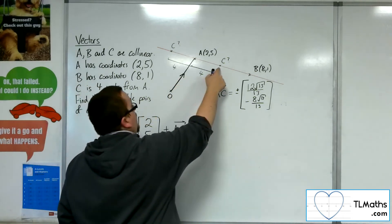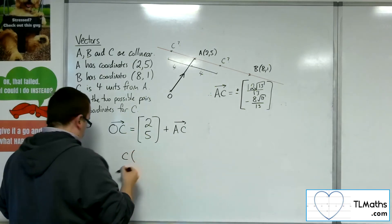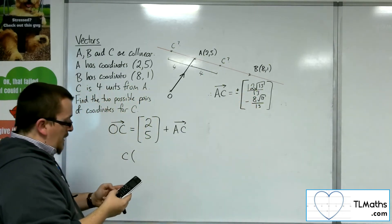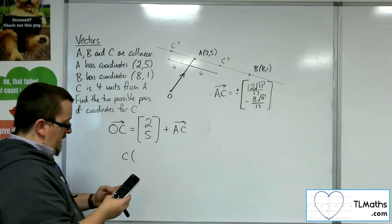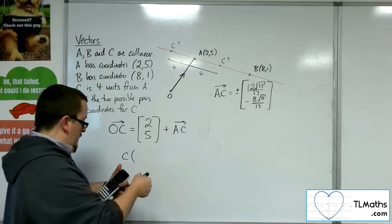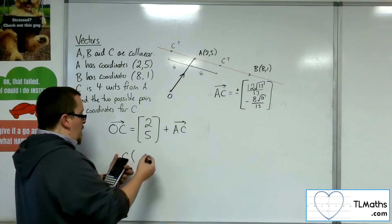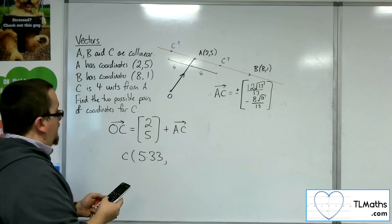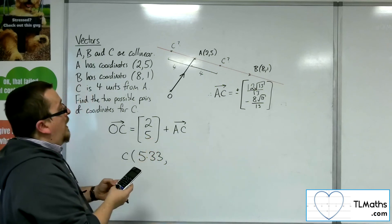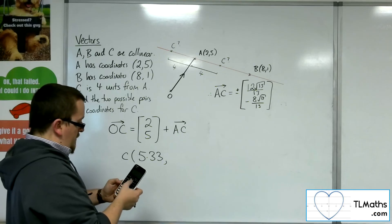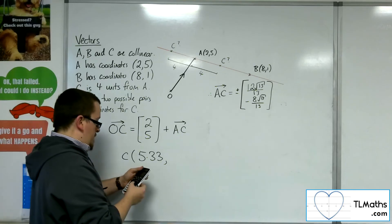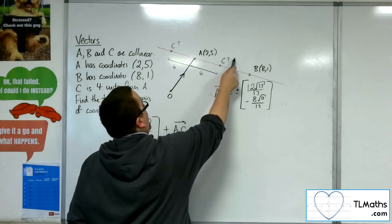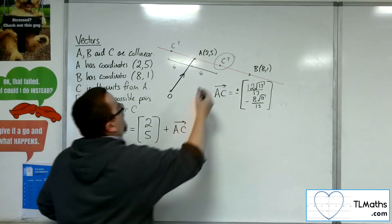So if I work out that coordinate of C, then I'll have 2 plus the 12 root 13 over 13. So 2 plus 12 lots of root 13 divided by 13. So quite horrible. I'll write it into three significant figures. So 5.33. And the Y value will be 5 take away 8 lots of root 13 divided by 13, which is 2.78 to 3 sig fig. So that's the coordinate of that one there. So let's call that C1.